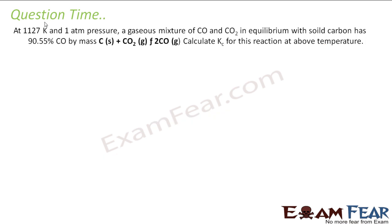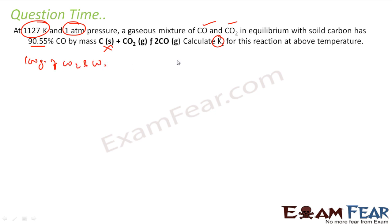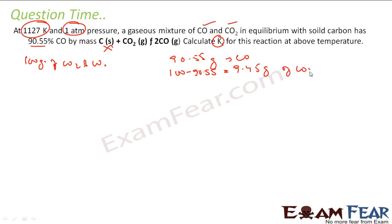At 1127 Kelvin with 180 atm total pressure, a gas mixture of CO and CO₂ is in equilibrium where CO has 90.55% by mass. We need to find Kc. Let's assume 100 grams of total mixture. Then 90.55 grams is CO and the remaining 100 minus 90.55, which is 9.45 grams, is CO₂.